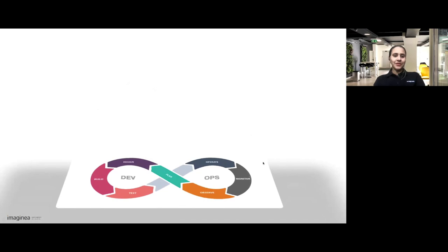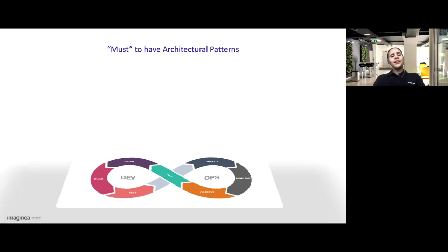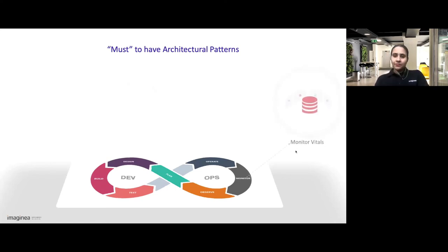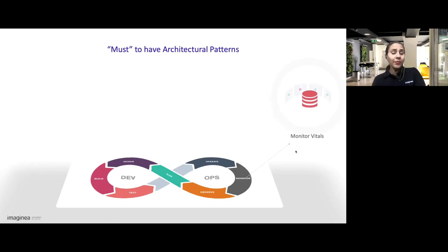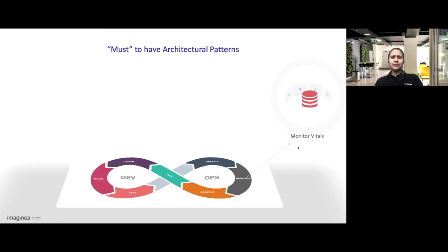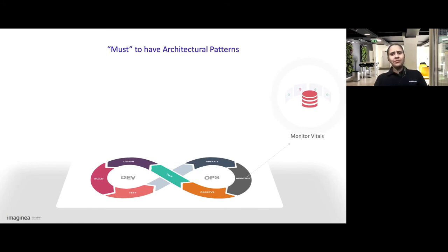In order to achieve that, there are some must-have architectural patterns. Number one: monitoring. It is as important as the system itself, and it should not be confused with observability. It is not just for identifying application issues or security breaches, but also for planning, decision making, and ensuring a more reliable system. At the same time, aiming to monitor everything is an anti-pattern.